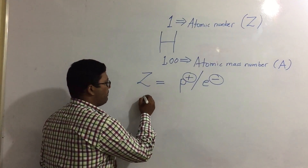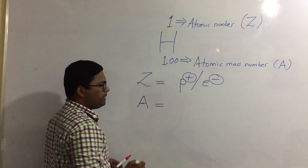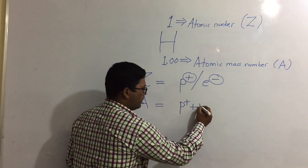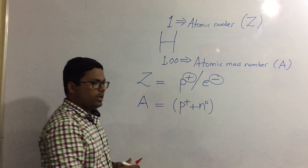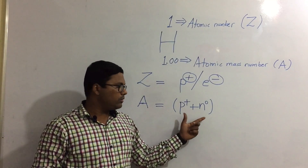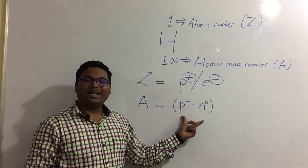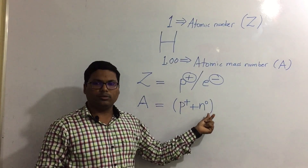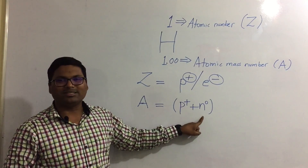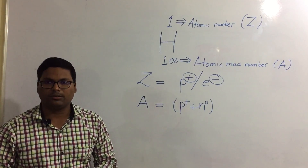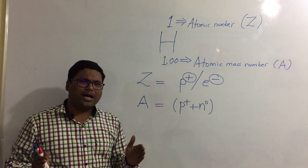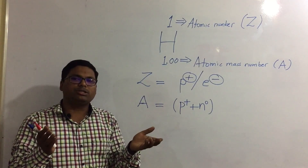Then let us come to the atomic mass number. By definition, the atomic mass number is the number of protons in the nucleus plus the number of neutrons present in the nucleus. The proton has a positive charge and the neutron doesn't have any charge, which is why a zero is written for it. The atomic mass number gives us the idea of how much atomic weight is present in any atom.